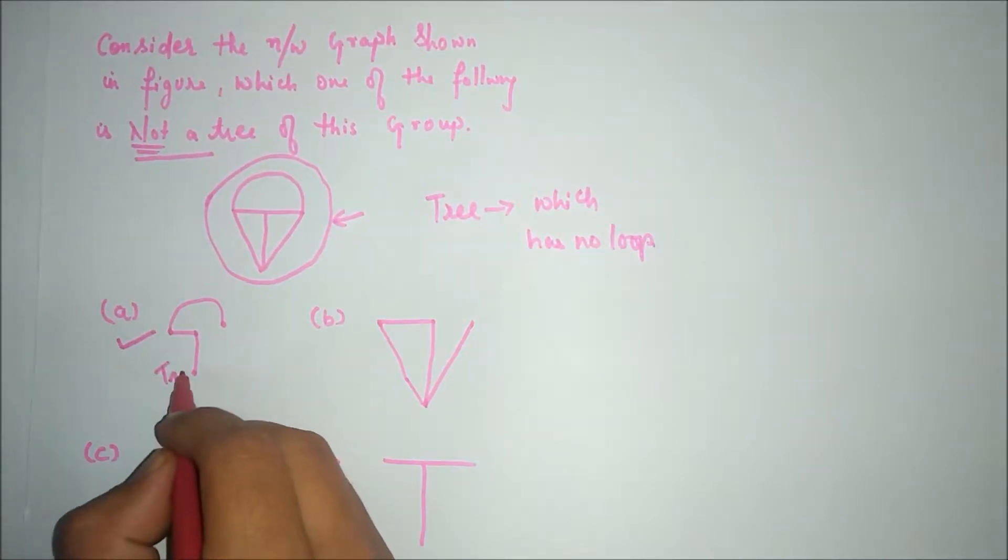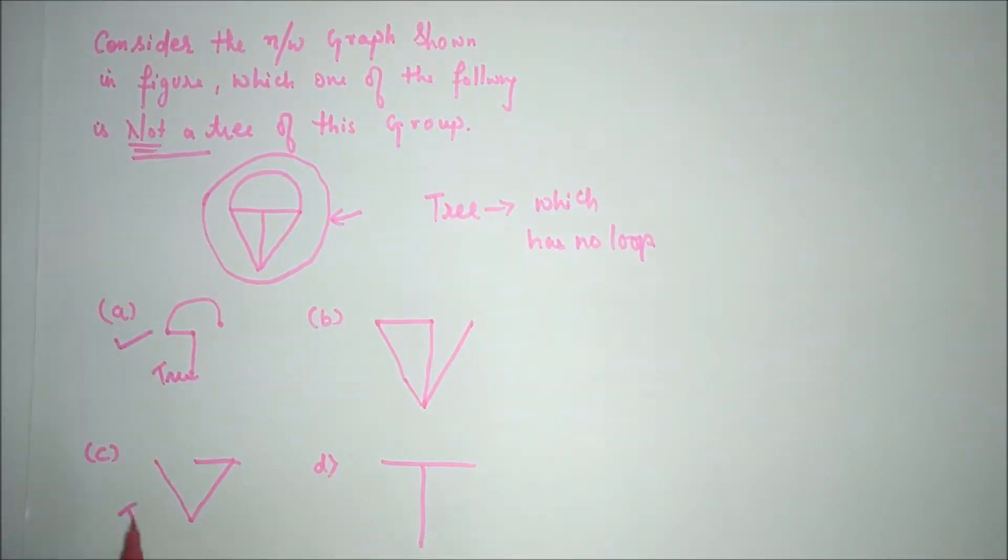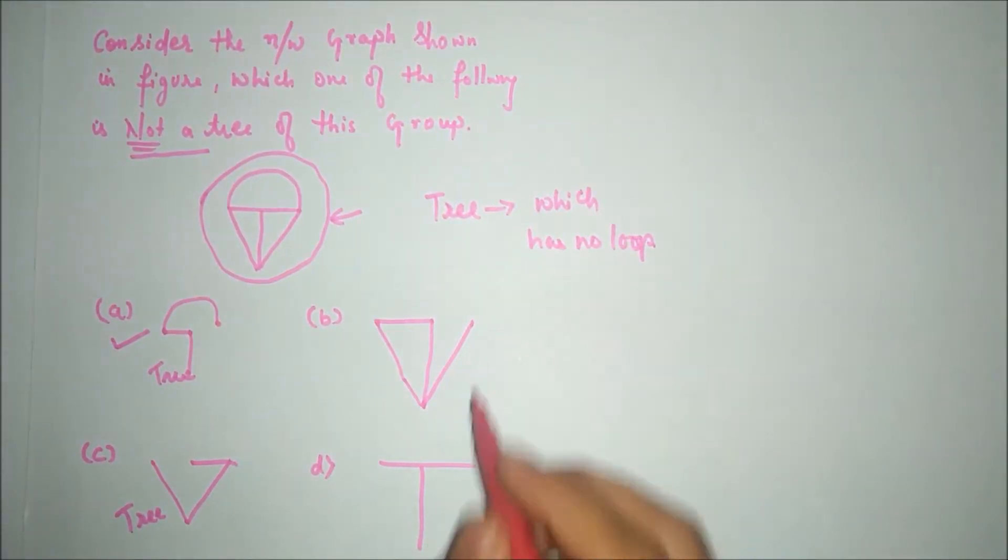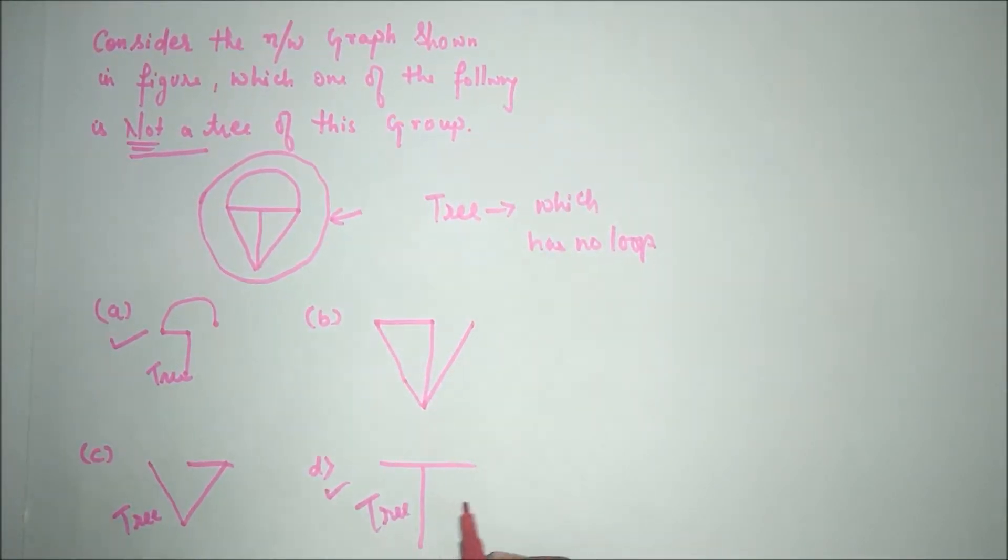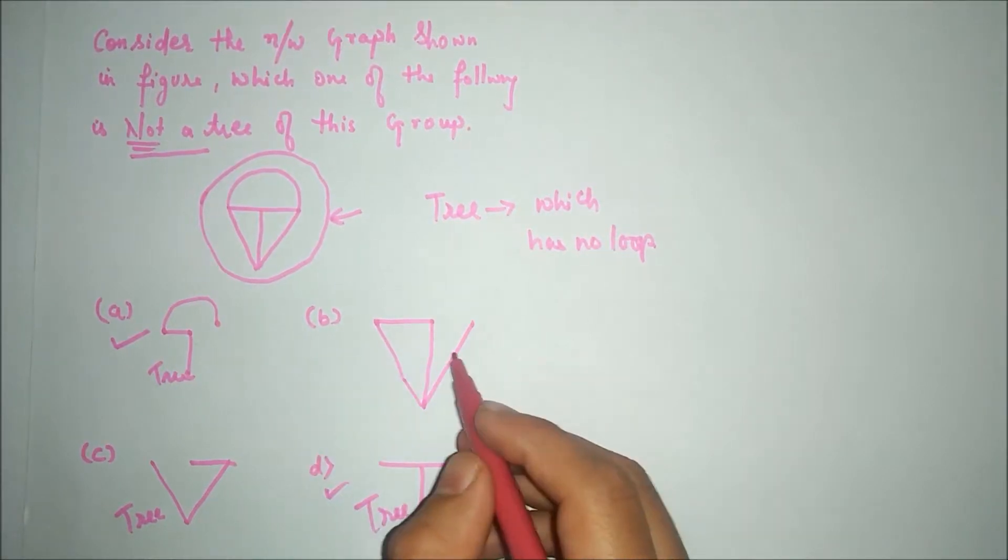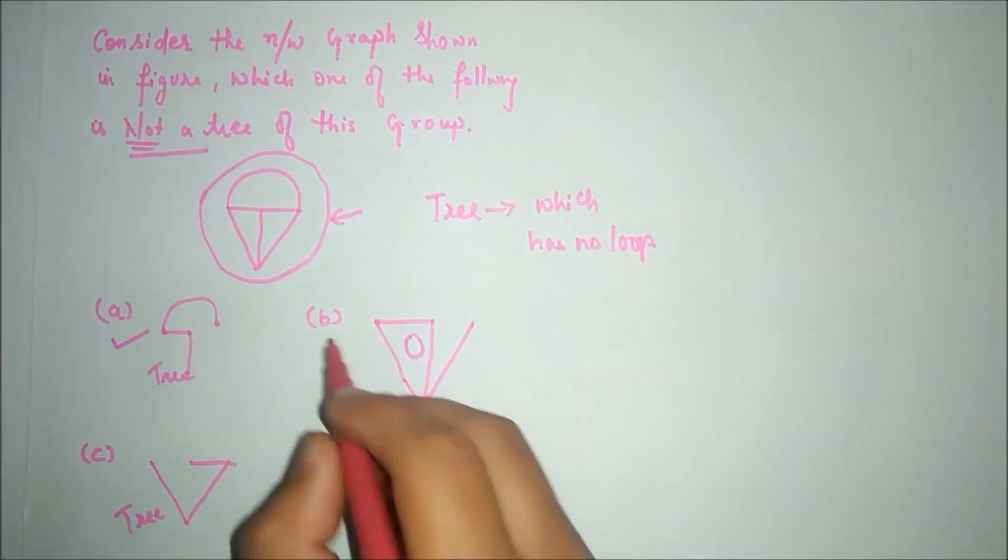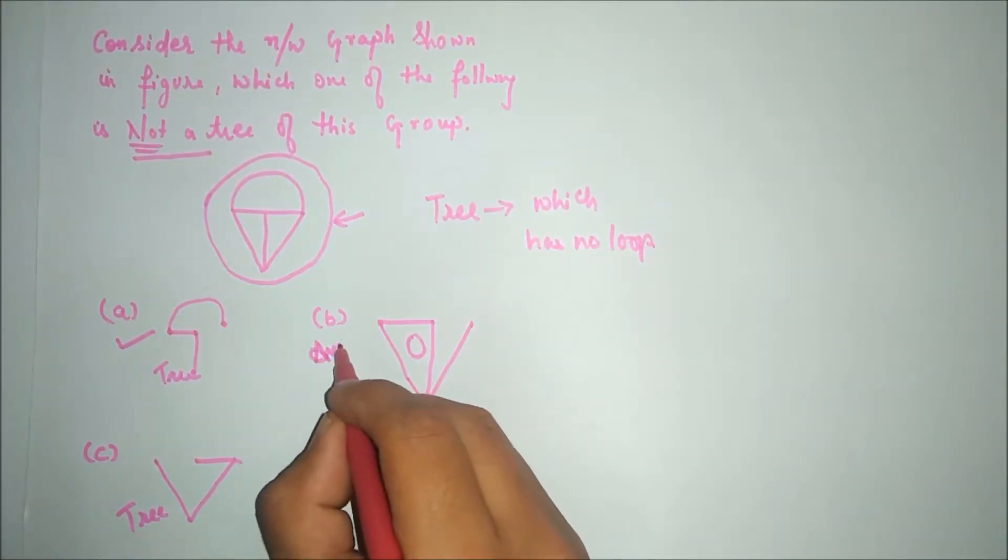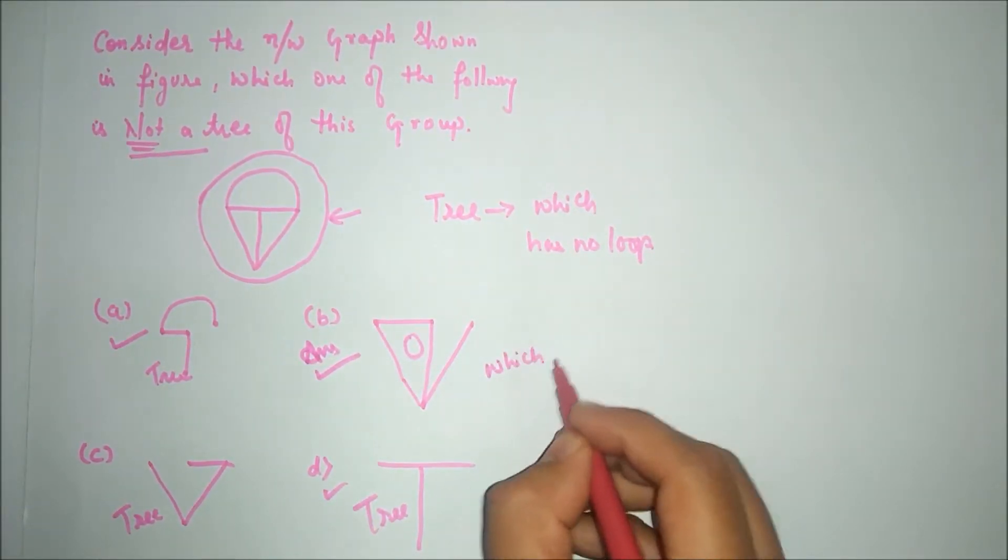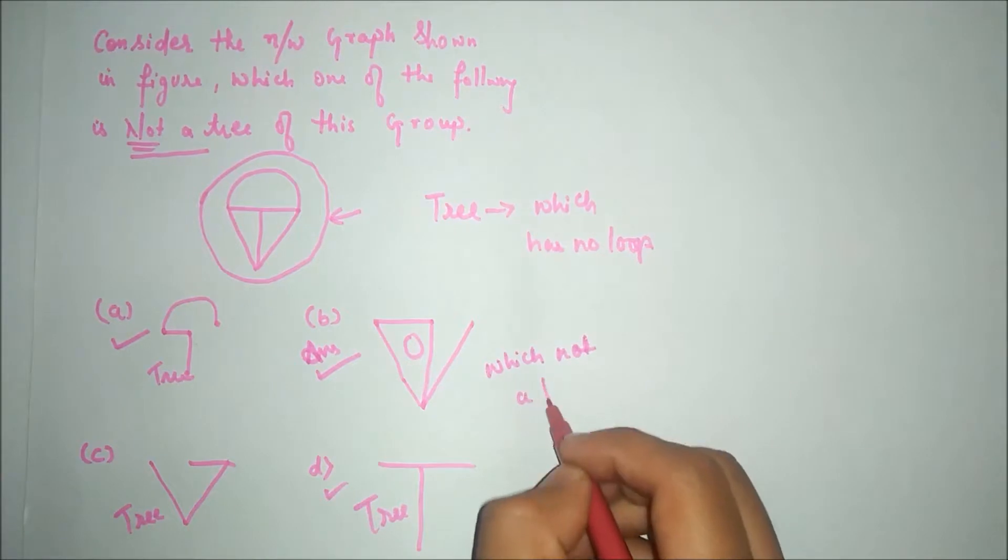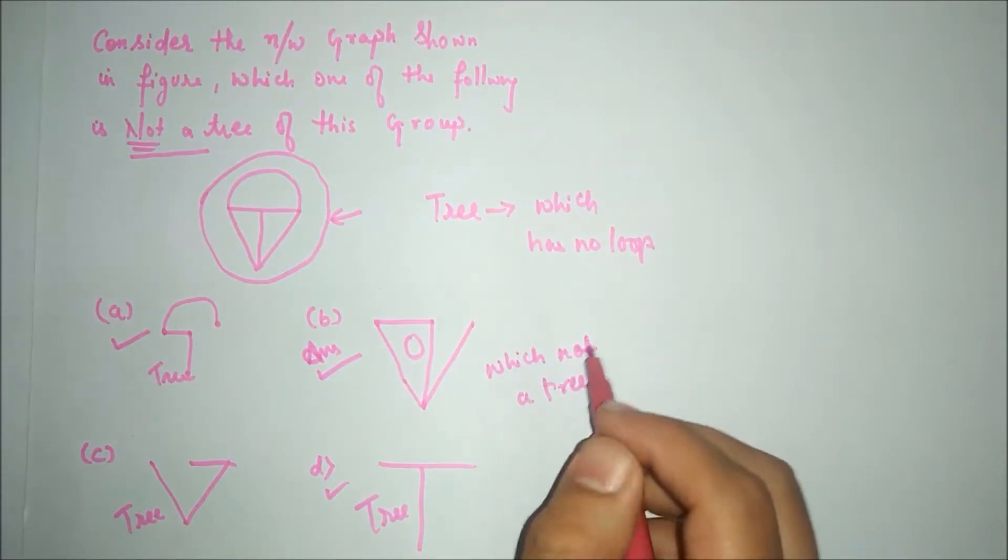So here we can see it has no loop, it is a tree. It is also a tree which has no loop, no closed loops. It is also a tree which has no closed loop.